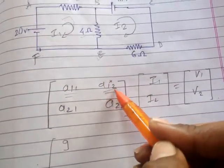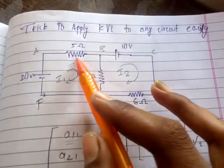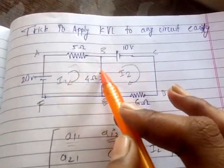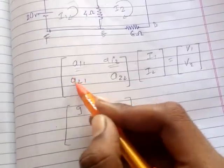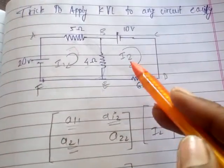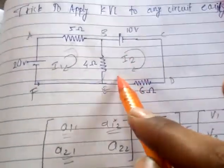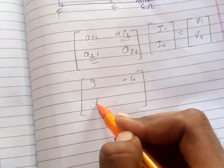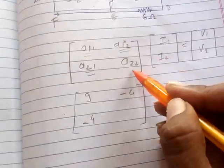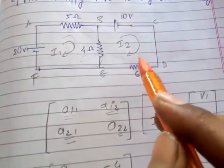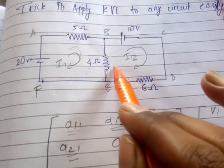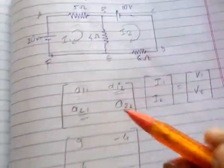For a12, you take the common resistance between loops 1 and 2, which is 4. Because the direction of both currents is opposite, you take minus 4. For a21, you again take the common resistance between the second and first loops — it is again 4, so minus 4. For a22, you add all the resistances in loop 2: 4 plus 6 equals 10.